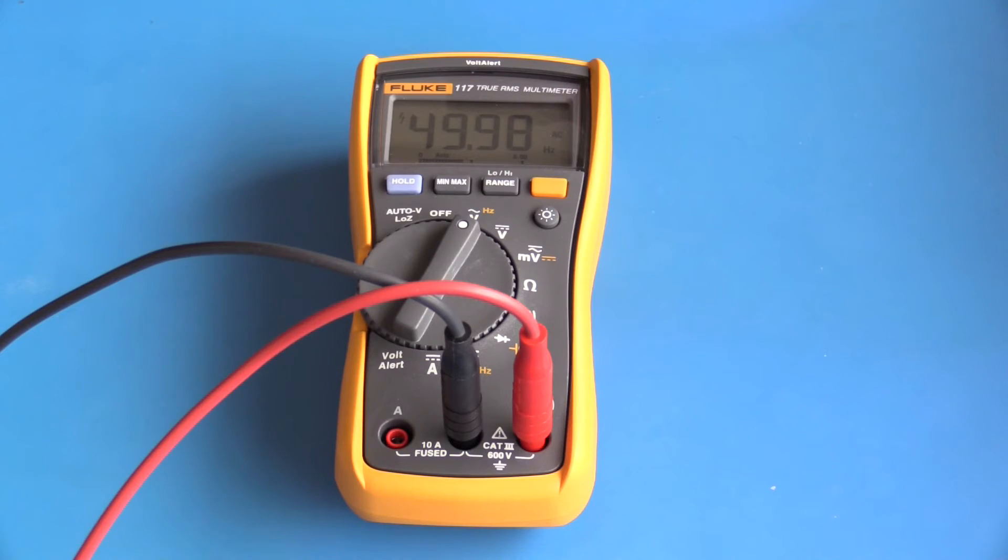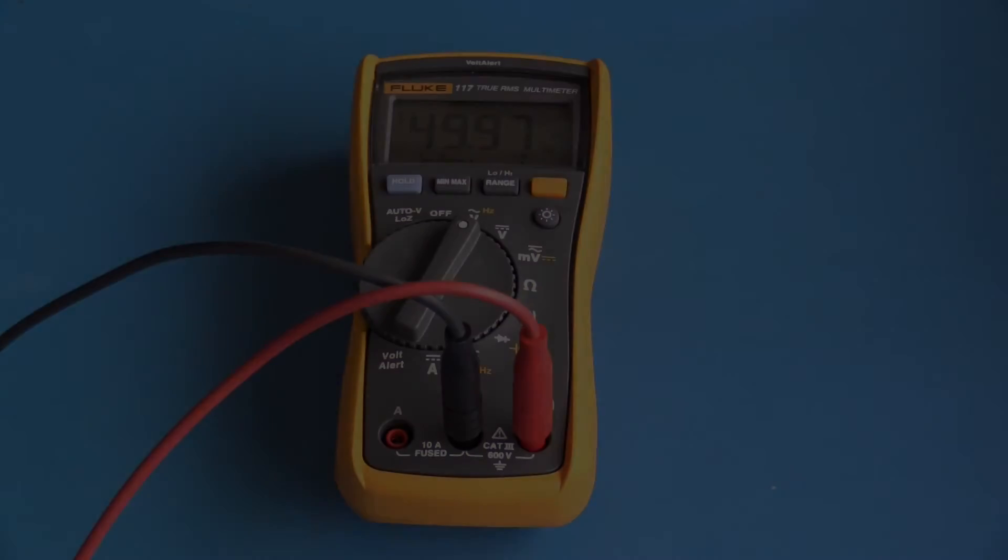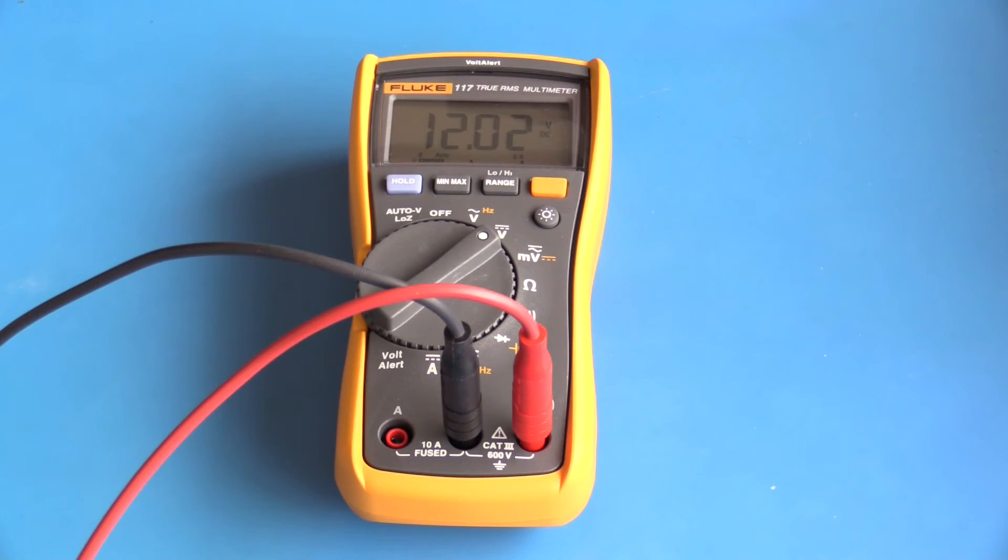I have this meter connected to a 12 volt power supply, and with the selector function moved to DC volts, I can see I've got 12 volts which is what I expect.